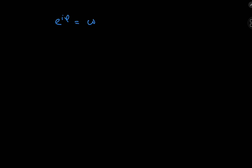Today we're going to be talking about complex trigonometric functions, and the starting point is pretty simple. We're going to start off with Euler's formula: e to the i·phi equals the cosine of phi plus i times the sine of phi. And we know that if we replace phi by negative phi, we get the cosine of phi minus i times the sine of phi.